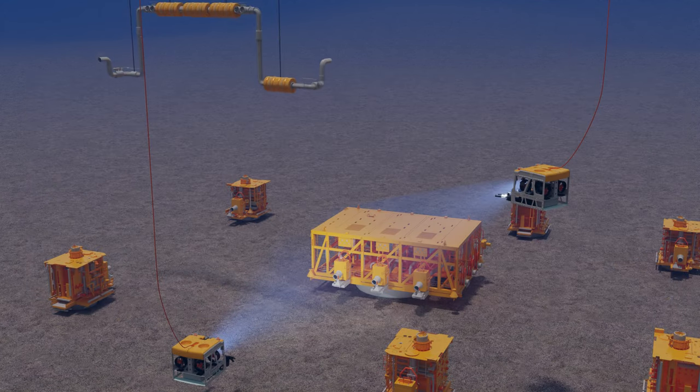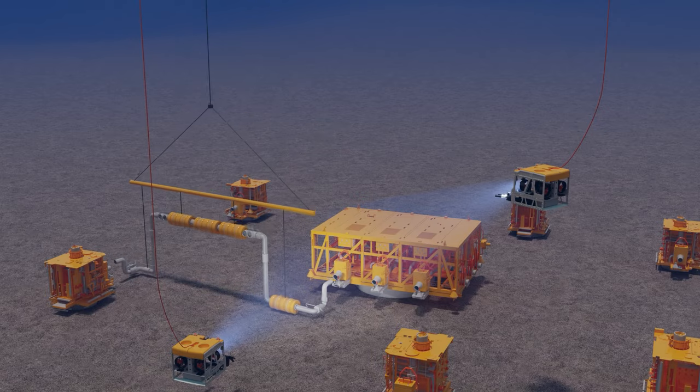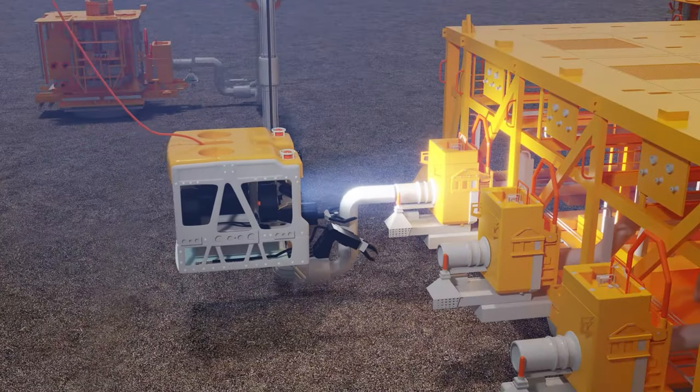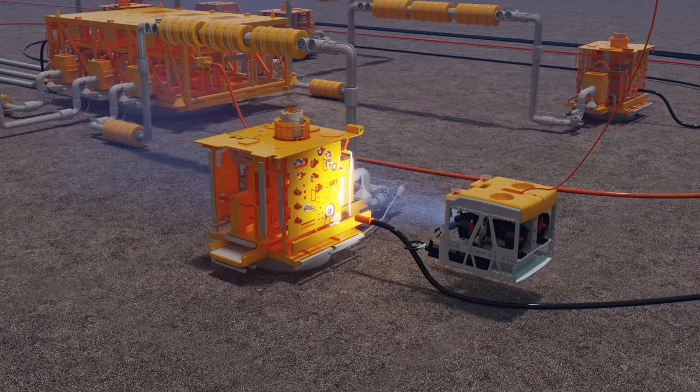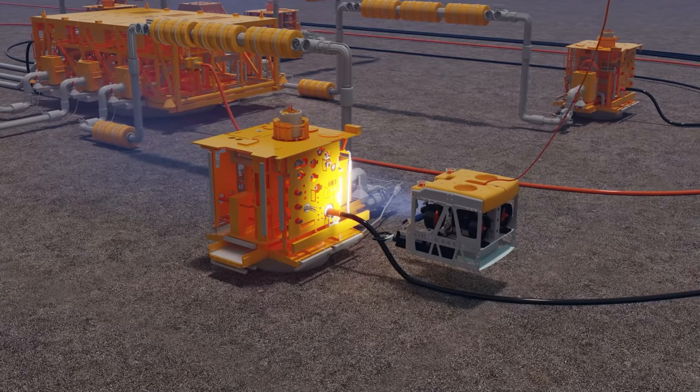The jumpers are short pipes. They can also be laid down using cranes. ROVs plug in necessary cables.